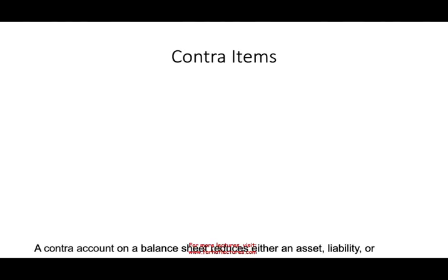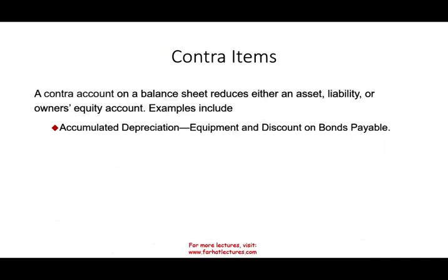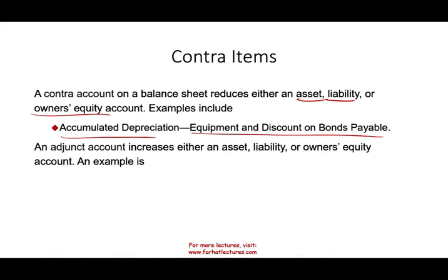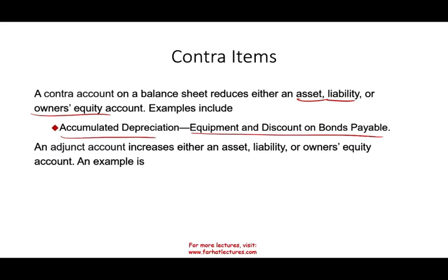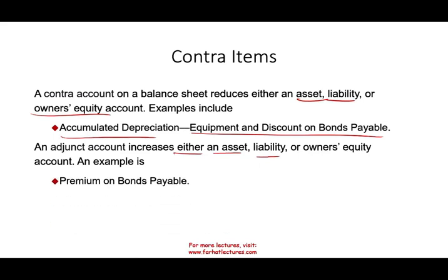Contra items are accounts on the balance sheet that reduce an asset, liability, or equity. Examples include accumulated depreciation, which reduces equipment, and allowance for bad debt, which reduces accounts receivable. Discount on bonds is another contra liability. Treasury stock is also a contra equity account. Adjunct accounts, on the other hand, increase an asset, liability, or equity — for example, premium on bonds payable is reported as a plus to the bond.